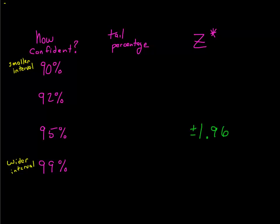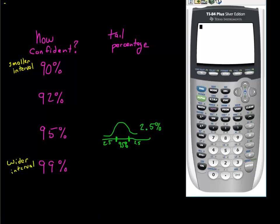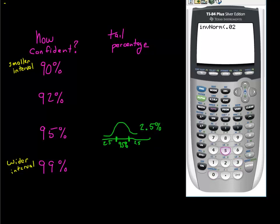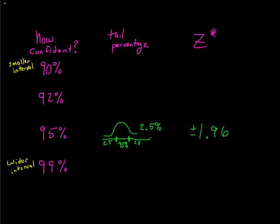I want to make sure you know where that comes from. If you think about the normal model and you want 95% confidence, that means 95% is in between this Z* and this Z*, leaving 5% left out — 2.5% on the bottom tail and 2.5% on the top tail. That tail percentage of 2.5% is what you use to calculate Z*. You go to your calculator, use invNorm(0.025), and that gives you 1.96. The negative sign is because it's the bottom tail; the top 2.5% is at +1.96.